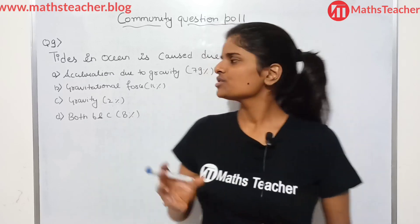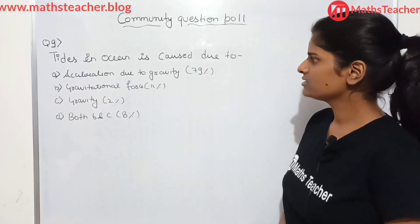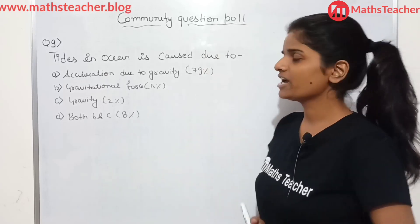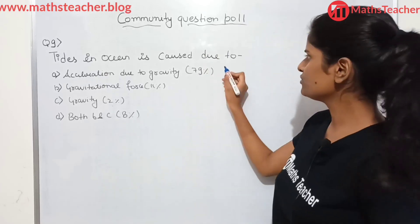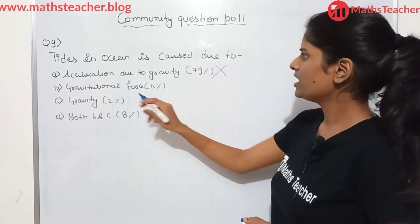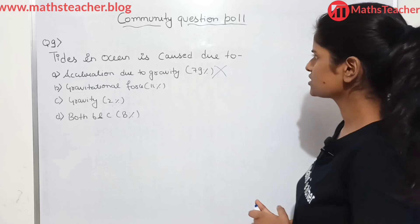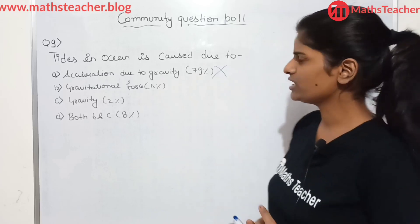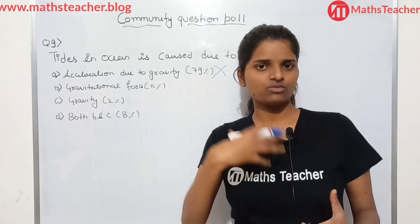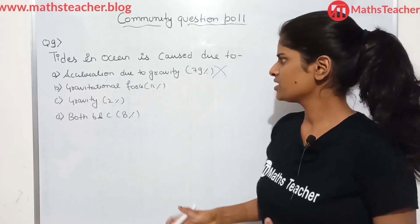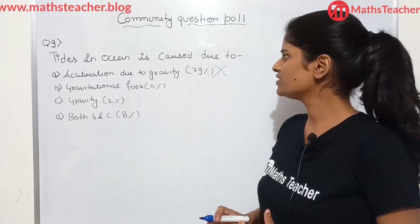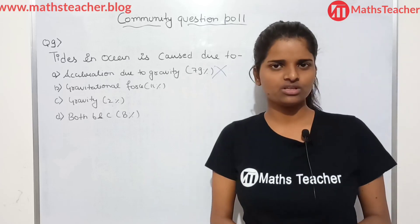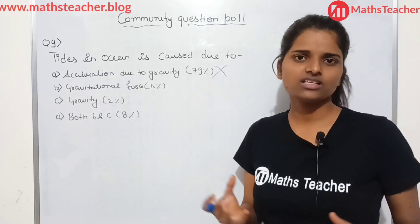So question number 9, which 79% of people have wrong. The question was: tides in ocean are caused due to — why do tides occur in the ocean? Option A was acceleration due to gravity, and 79% of people gave the wrong answer.